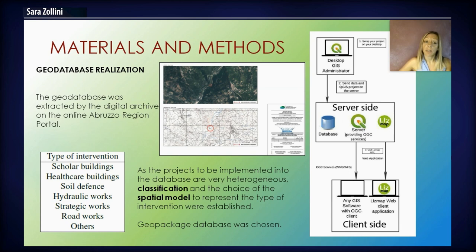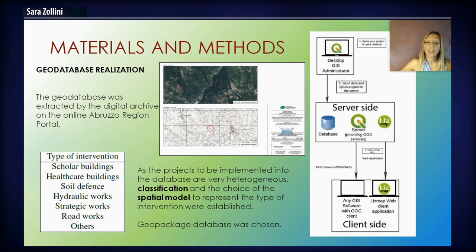For the geodatabase realization, data was extracted from the digital archive on the online Abruzzo region portal. As the projects to be implemented into the database are very heterogeneous, the classification and the choice of the spatial model to represent the type of intervention — as shown in the table on the left — were established. Everything was stored in a geopackage database.